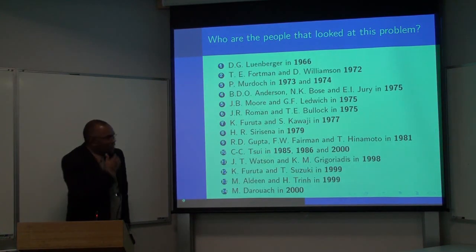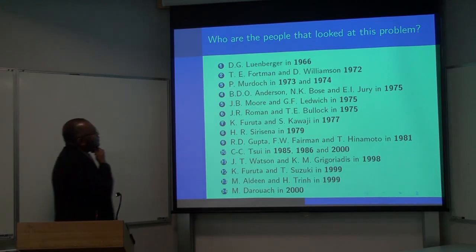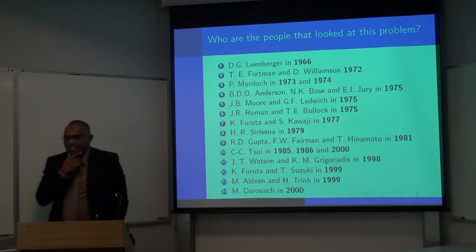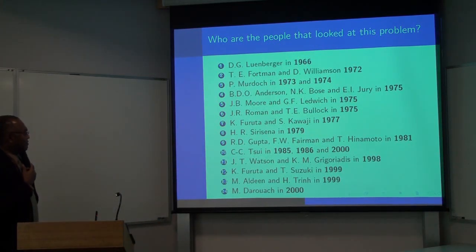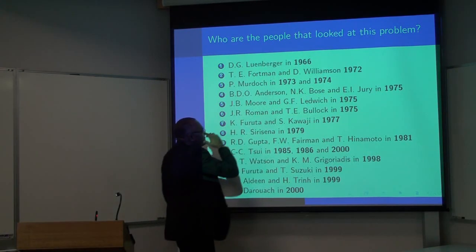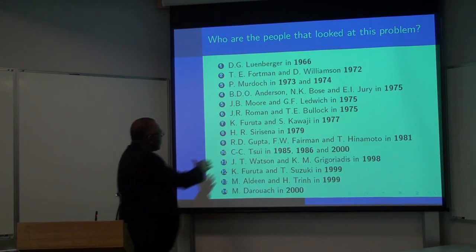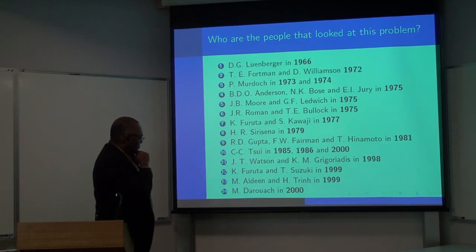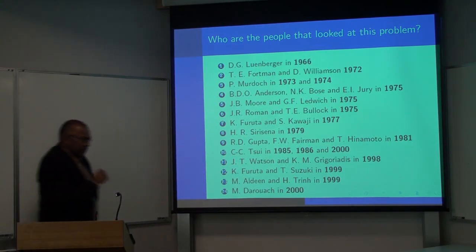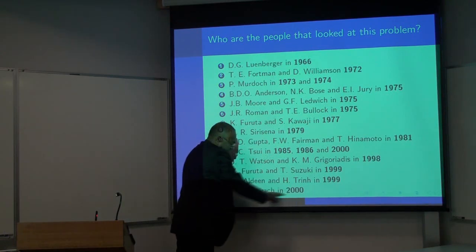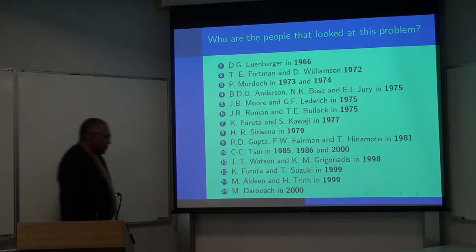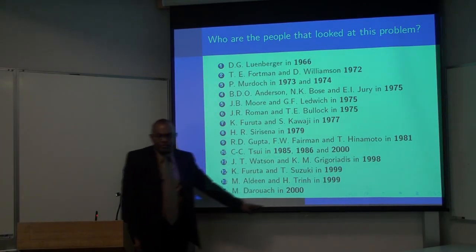Who are the people who looked at this problem, starting from Luenberger in 1966? We see a lot of familiar names here: Luenberger himself, Jury, John Moore, Mohammed Aldi from the University of Melbourne. And of course, a very important result was reported by Daruch in 2000. Our work is actually based on the work of Daruch in 2000.